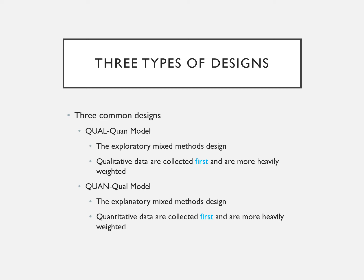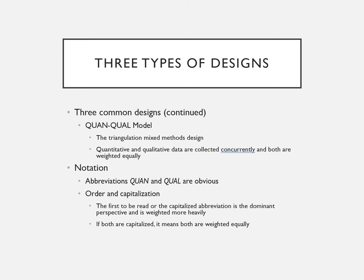The third common design is QUAN + QUAL, conducted concurrently, where both are weighted equally and results are triangulated. The abbreviation convention shows that the capitalized abbreviation is the dominant perspective weighted more heavily; if both are capitalized it means both are weighted equally. This doesn't necessarily mean they must be in sequence — they can be conducted concurrently.